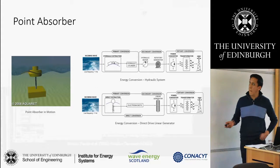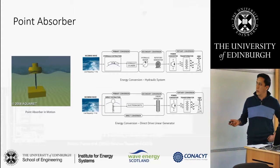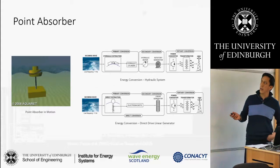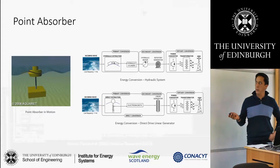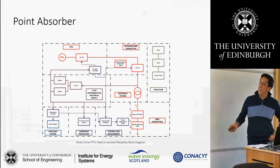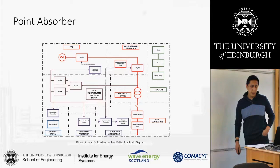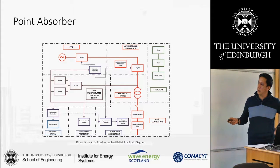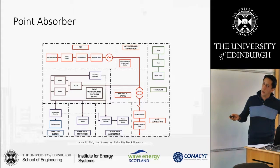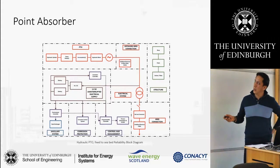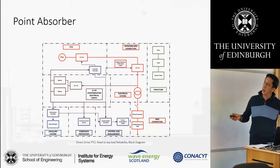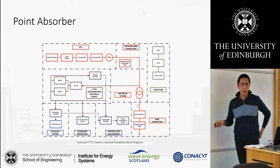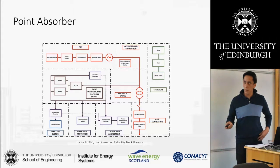For the point absorber, the power takeoff could use a direct drive linear generator, or it could use a hydraulic system. That's where the main difference lies in the point absorber, because the structure will be basically the same. A reliability block diagram for the point absorber shows the hydraulic system is more complex compared to the linear generator, so it should have a higher failure rate because it has more components.